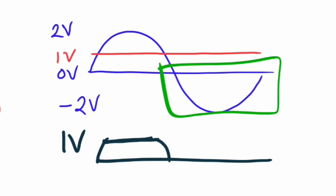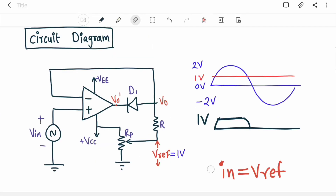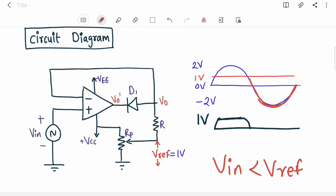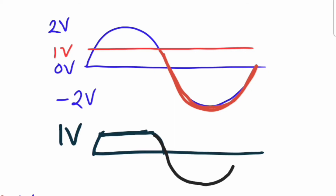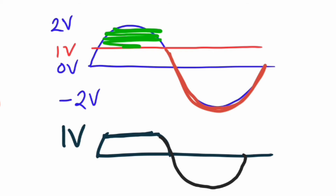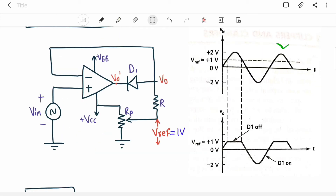In the negative half cycle, V_in is always less than V_ref since it is negative. Again there is sufficiently negative voltage at the N-terminal and positive at the P-terminal, so the diode is forward biased (short circuit) and the loop is closed. The output follows the input throughout the negative half cycle. The final output waveform shows the portion above V_ref clipped flat, while the rest follows the input.